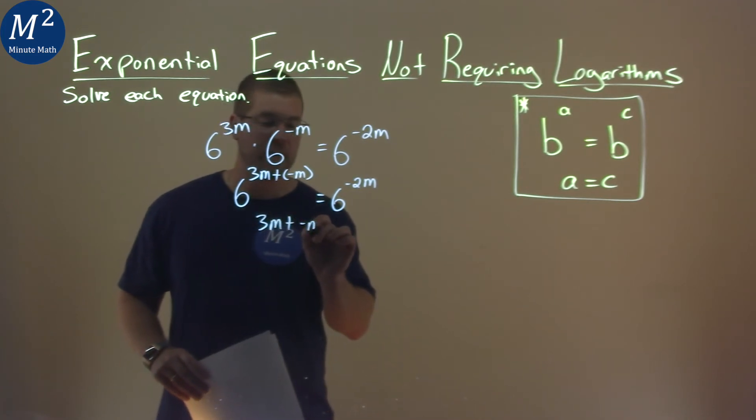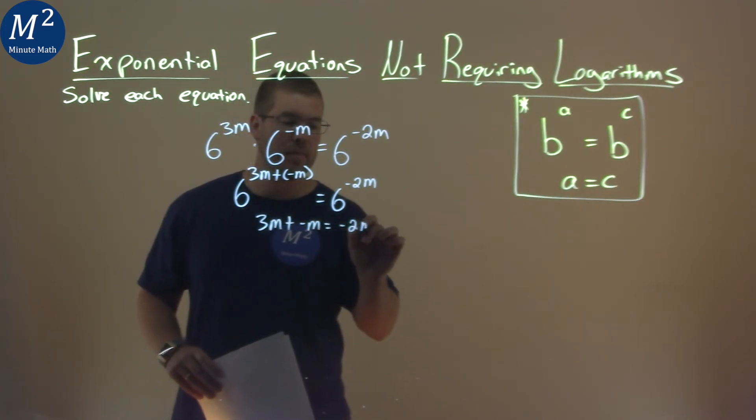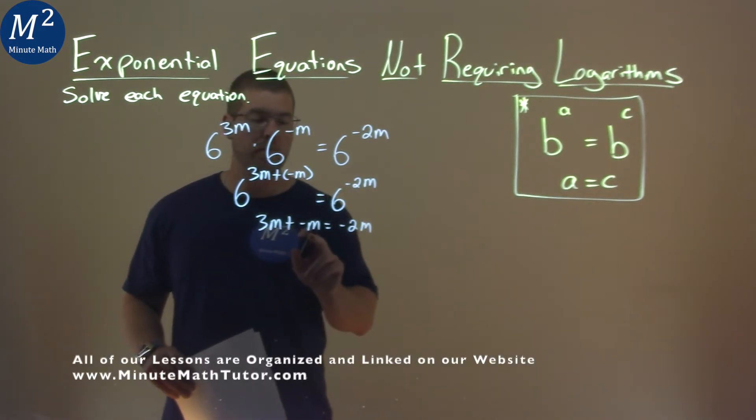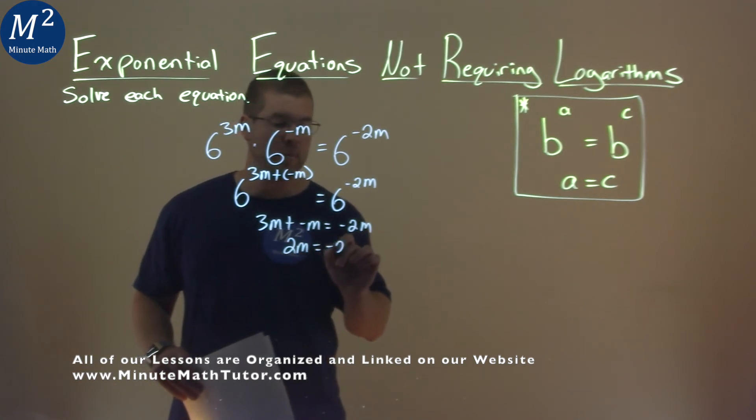3m plus a negative m is equal to a negative 2m. Combine our like terms on the left-hand side. 3m plus a negative m is a positive 2m, or minus a 2m here.